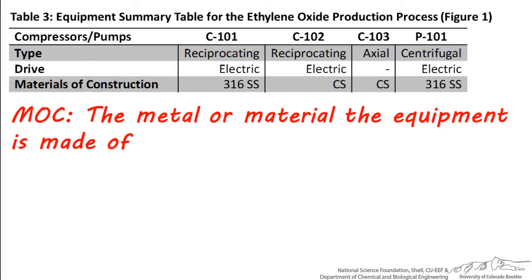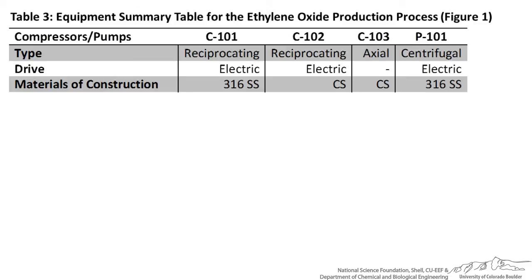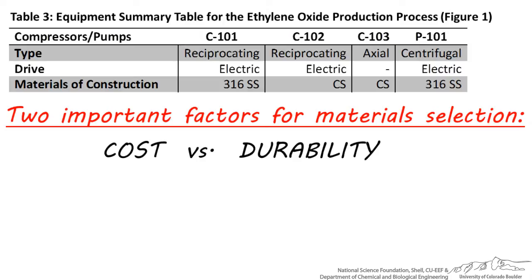Materials of construction is often abbreviated MOC, and is the specific metal or material which the piece of equipment is made of. Selecting the right MOC is important because the process fluid will be in contact with this surface, so it must be able to withstand the temperatures and chemical exposure to the stream. ChemCAD or Aspen will not select the appropriate material for you — you must select this by weighing two important factors: the cost of the material versus the durability required to withstand the temperatures and chemical components.